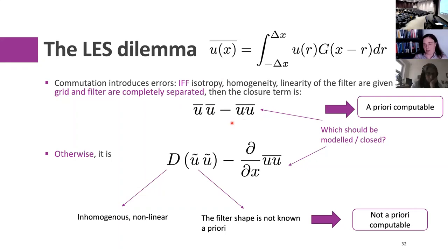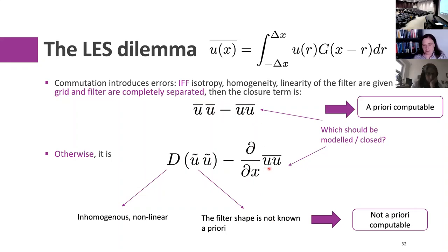The truth is that the true closure term for discretization-filtered LES is actually a different expression containing a nasty term — the discrete representation of your discretization operator. This is where you plug in your DG scheme, finite volume scheme, finite difference scheme, with all the limiting, reconstruction, Riemann solvers, and so on. This term is the computed velocity field — what pops out of your discretization — not a nicely a priori filtered term. These two expressions are meant to represent the same thing, but they are very different.